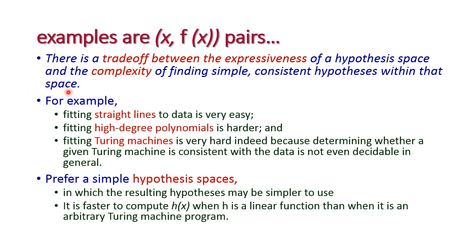There is a trade-off between the expressiveness of the hypothesis space and the complexity of finding a simple consistent hypothesis within that space. Fitting a straight line to the data is very easy; fitting a high-degree polynomial is harder; but fitting into a Turing machine is very hard because determining whether a given Turing machine is consistent is difficult. We prefer simpler hypothesis spaces where the resulting hypothesis is simpler to use and faster to compute — h(x) when h is a linear function is much faster than when it is an arbitrary Turing machine program.